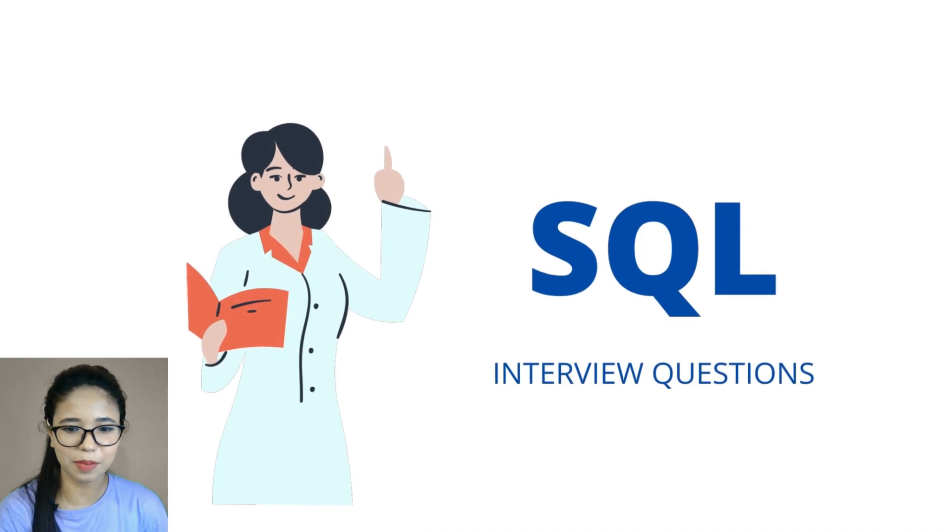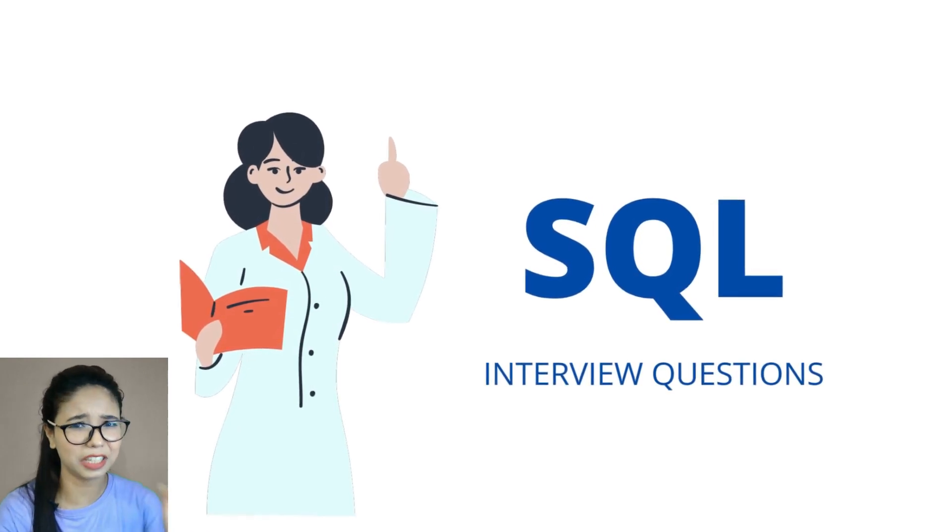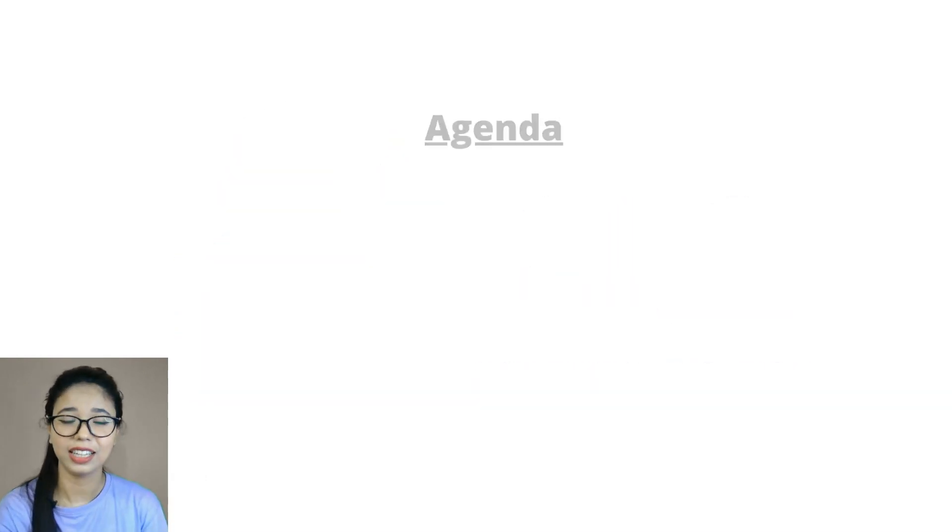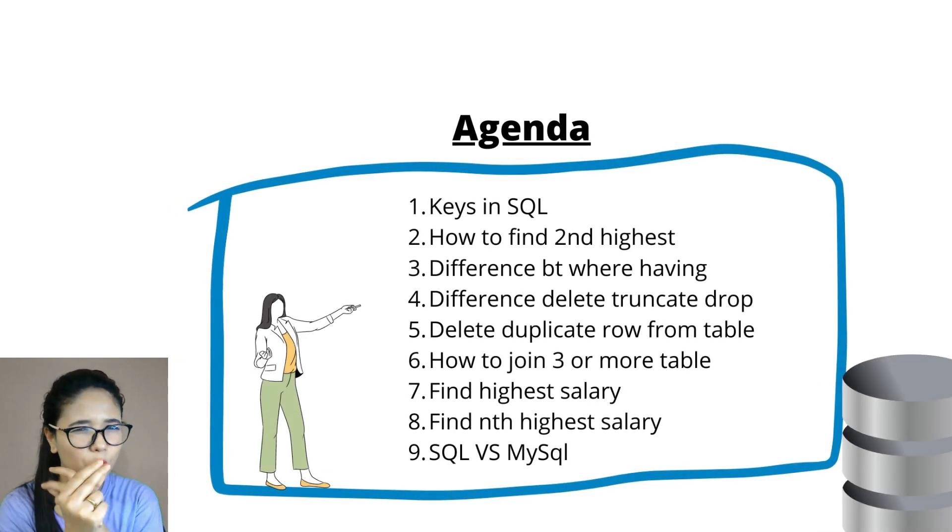Now here is the next question: how to find the Nth highest salary of an employee. I have already explained how to find the second highest salary of an employee, but for the Nth — it could be the third, fourth, or fifth highest salary. How are you going to find that? I have an answer for you, and if you've watched my previous lecture you're going to understand it quickly.